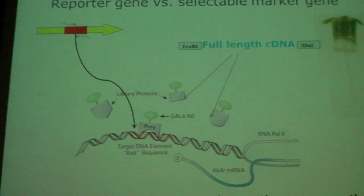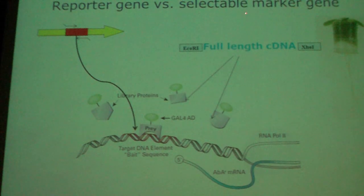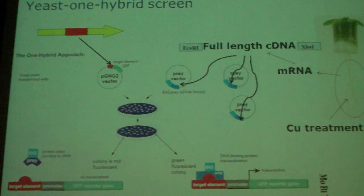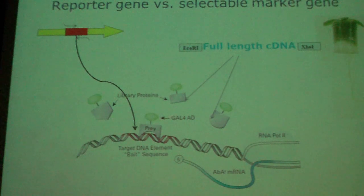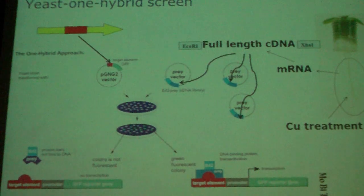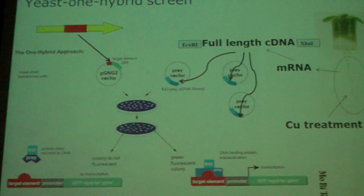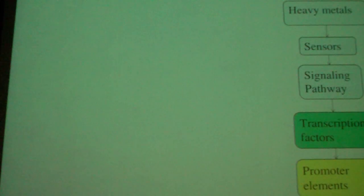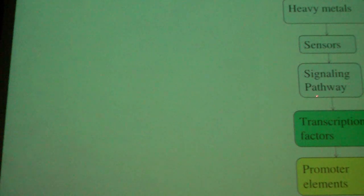It's important to note the difference between a reporter gene and a selectable marker gene. A reporter gene is always there and all cells are alive — you see both white and green yeast cells. With a selectable marker gene such as antibiotic resistance, you would add antibiotic to the plate and get no colonies at all except those with a positive interaction, which would grow because they are resistant to the antibiotic.